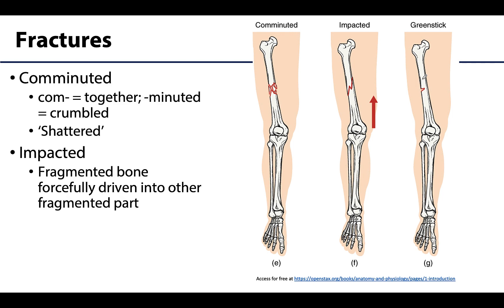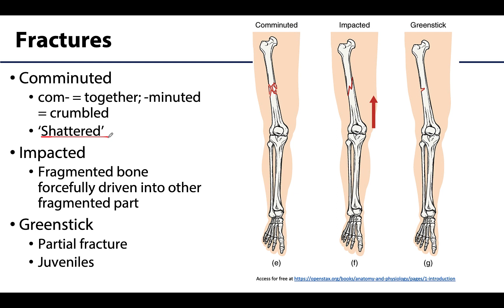A comminuted fracture is sometimes colloquially referred to as a shattered bone, with a portion of the bone being broken into many much smaller bony fragments lying between the two major bone fragments. So say this is one of your major fragments and your second major bone fragment — in the middle you will literally have a shattering of bone with multiple small portions. These are typically much slower to heal, as it's hard for all those bony parts to properly align, and sometimes some of that bone has to be removed.